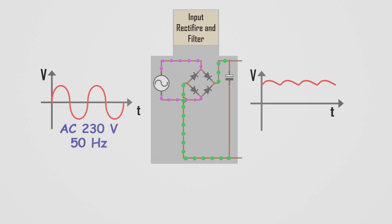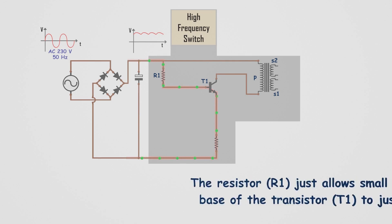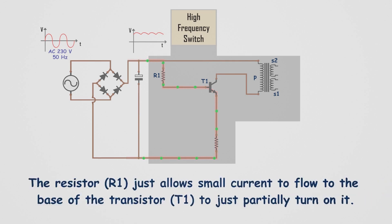The heart of the SMPS is the high-frequency generator, which operates at a much higher frequency than the mains AC frequency. This generator typically uses a transistor-based oscillator circuit to produce the high-frequency switching. The transistor T1 is connected to the primary coil of a small transformer. The resistor at the base of T1 partially turns it on, allowing only a small current to flow from collector to emitter.